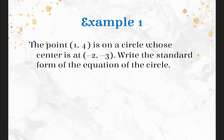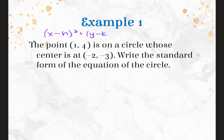The first thing we're going to do is find the equation given a point and a center. If the point (1, 4) is on a circle whose center is at (negative 2, negative 3), write the standard form of the equation. I'd rewrite out the standard form: (X minus H) squared plus (Y minus K) squared equals R squared. The center is (negative 2, negative 3), so negative 2 is my H, negative 3 is my K, and X is 1 and Y is 4.